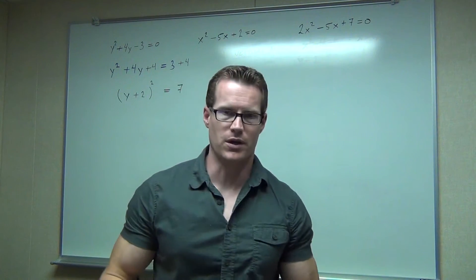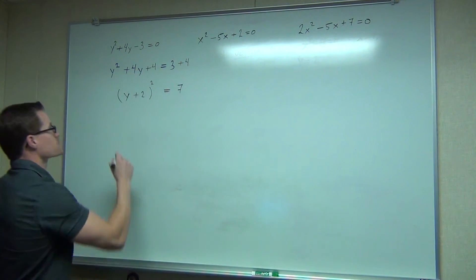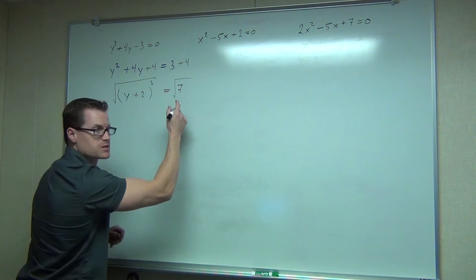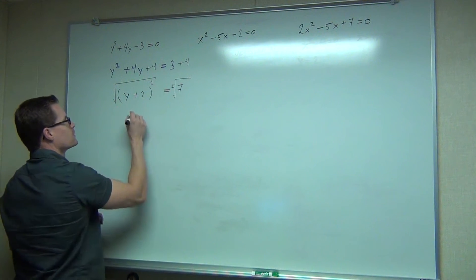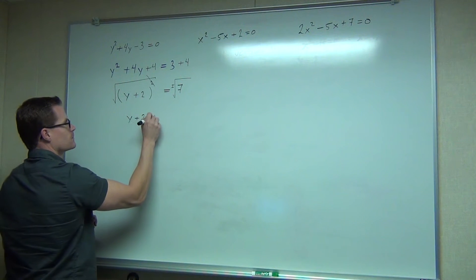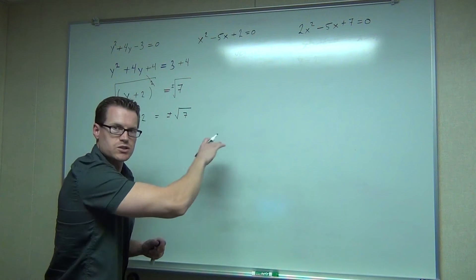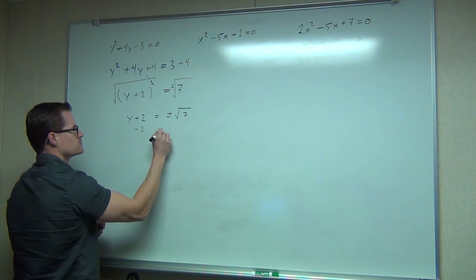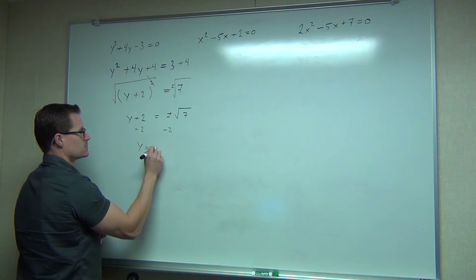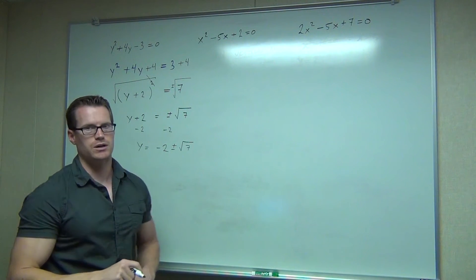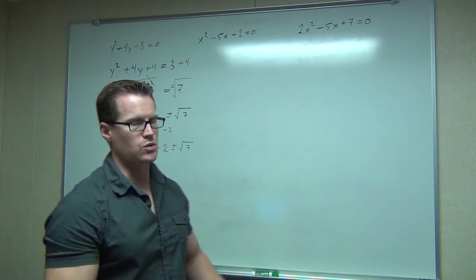From here, you're home free. You're going to take the square root of both sides. Don't forget your plus and minus. Subtract 2. And you're done. You should write those answers out explicitly as two different solutions.